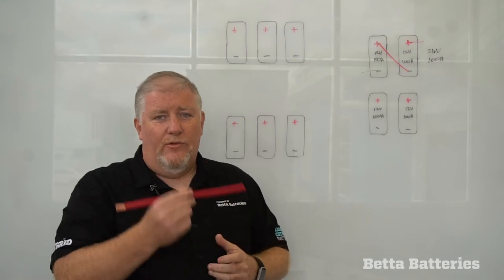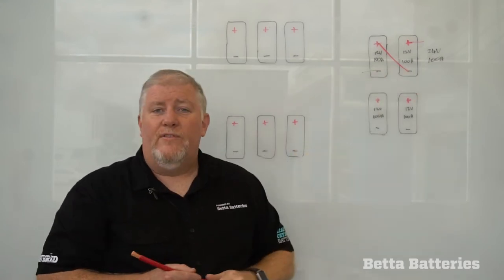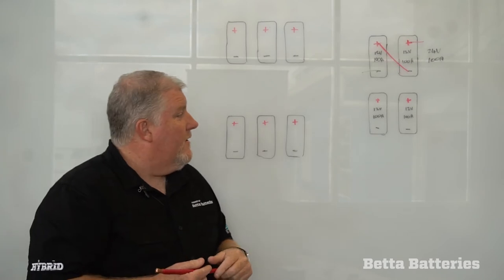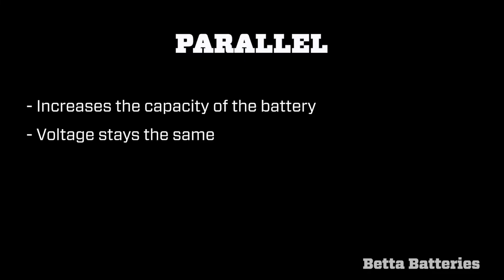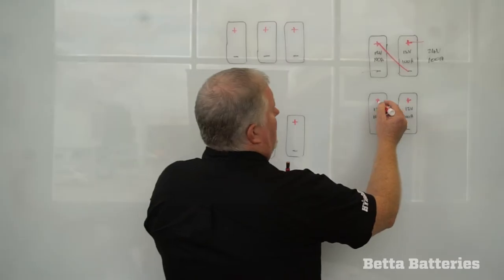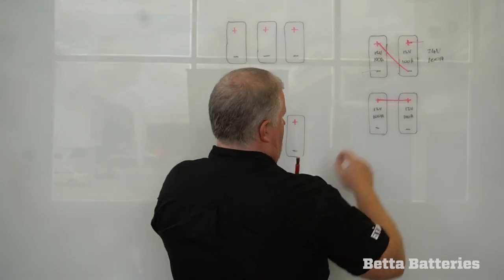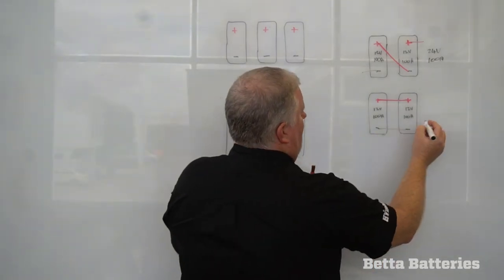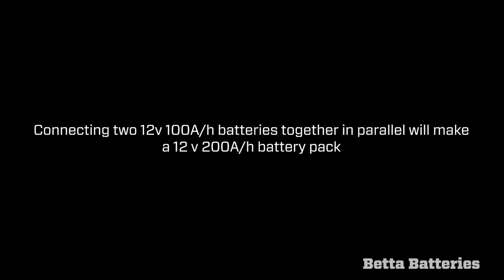So again cabling, cable size, configuration make a difference. If I now look at parallel that's where we want to increase the capacity of the battery but not the voltage. So we simply join the two terminals together we link them. That will become a 12 volt 200 amp battery pack.